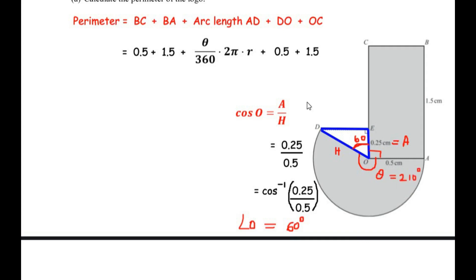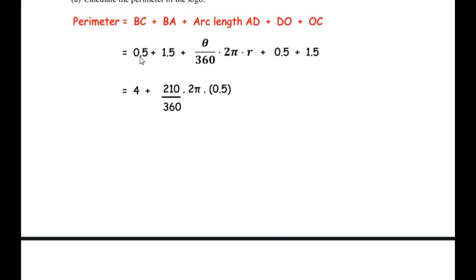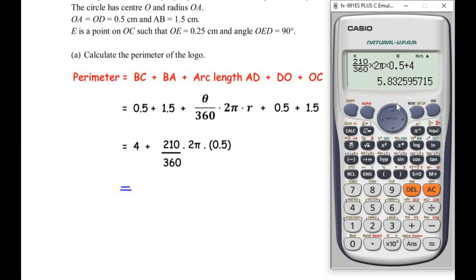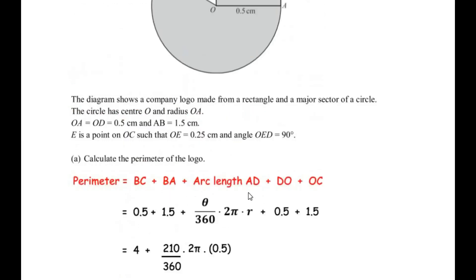Now we substitute theta into the arc length formula. Adding all known values — 0.5 plus 1.5 plus 0.5 plus 1.5 gives 4 — plus the arc length using 210 over 360 times 2π times 0.5. Adding these together gives 5.8325, which rounded to three decimal places is 5.833 centimeters. This is the perimeter of the given logo.